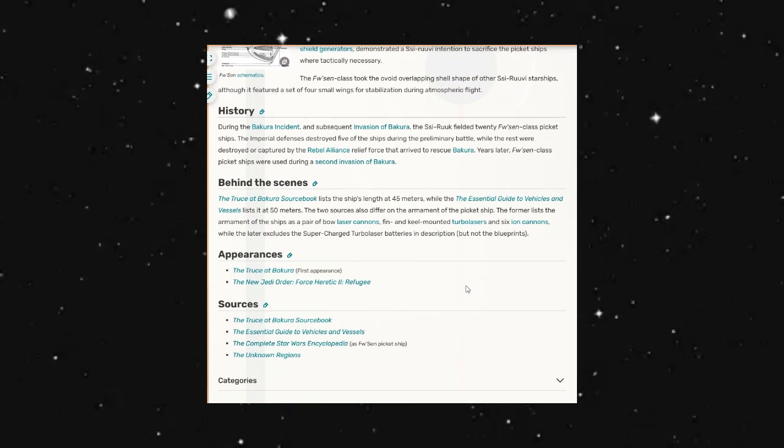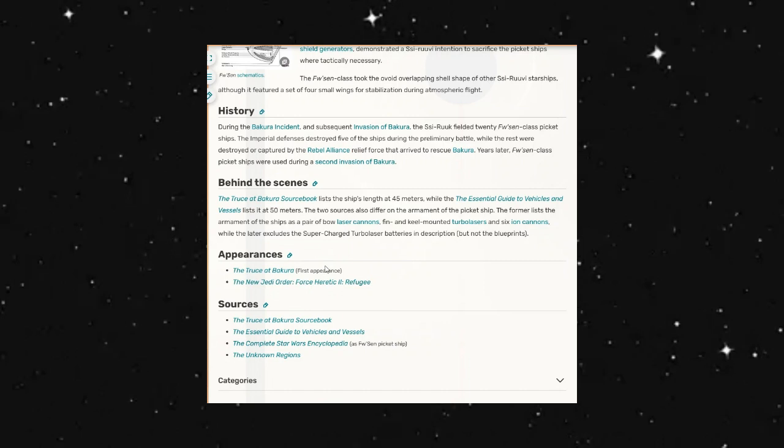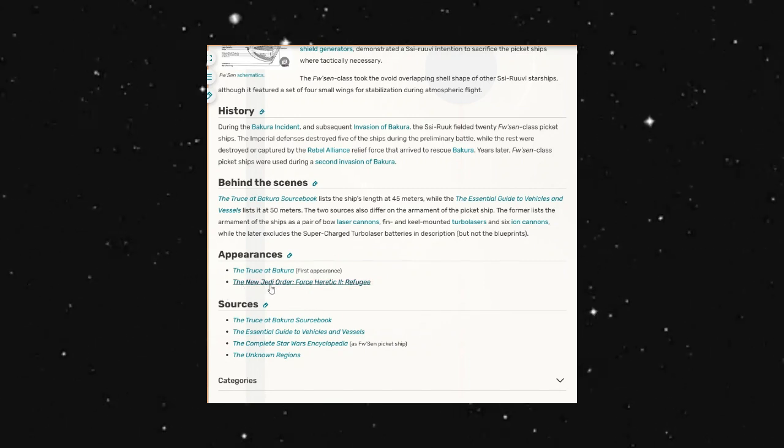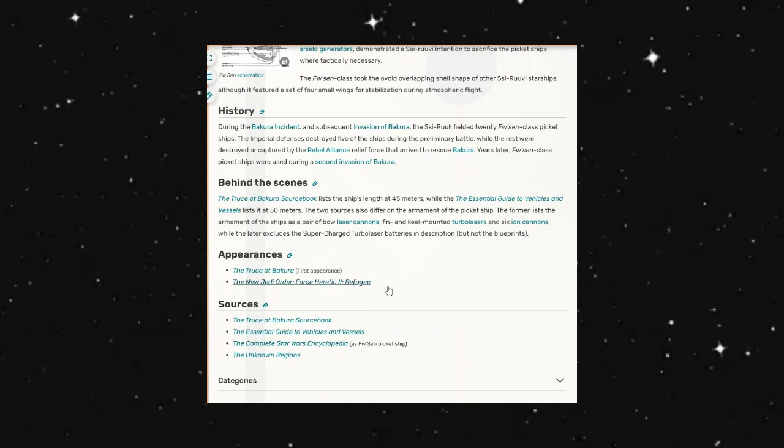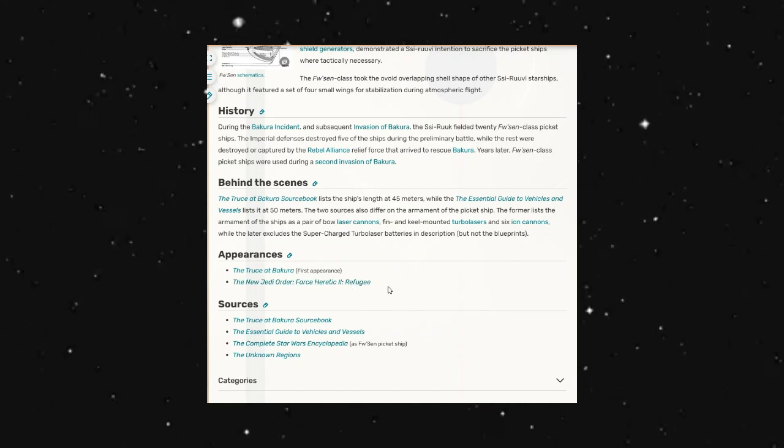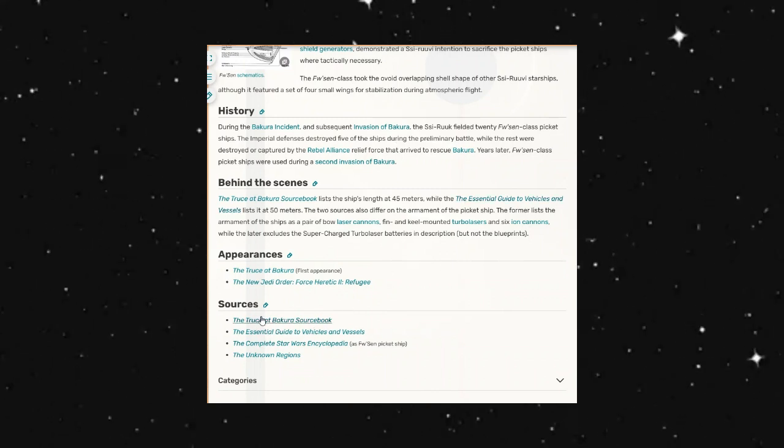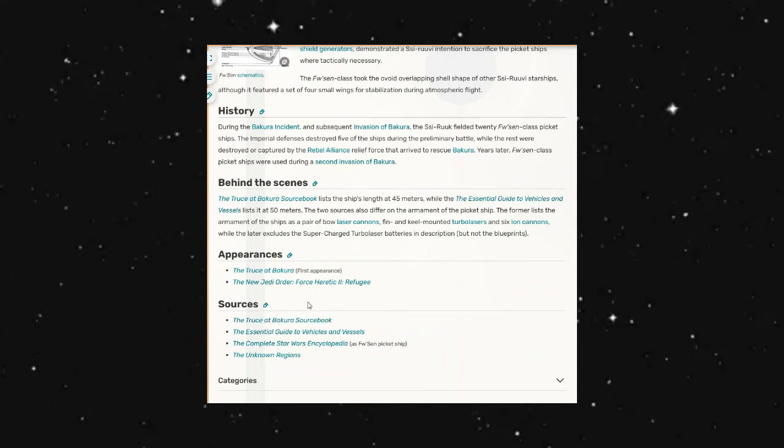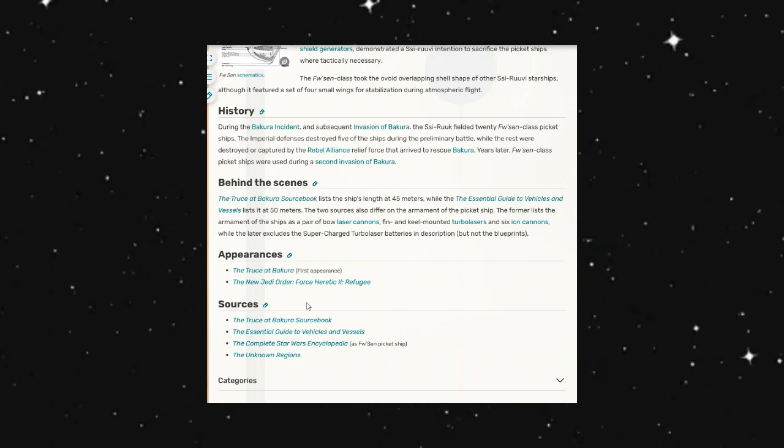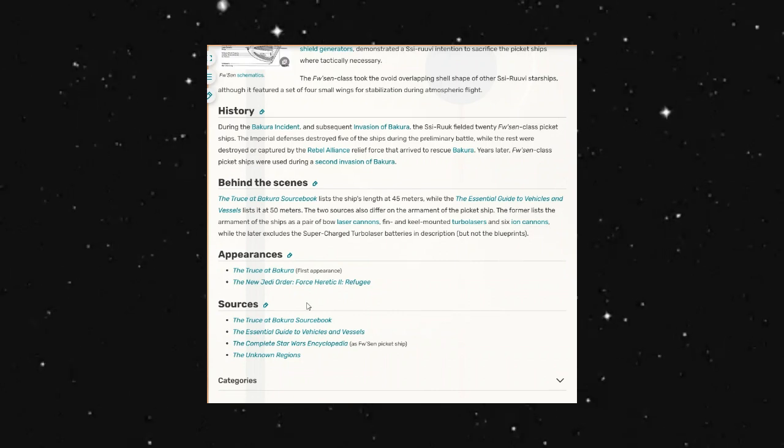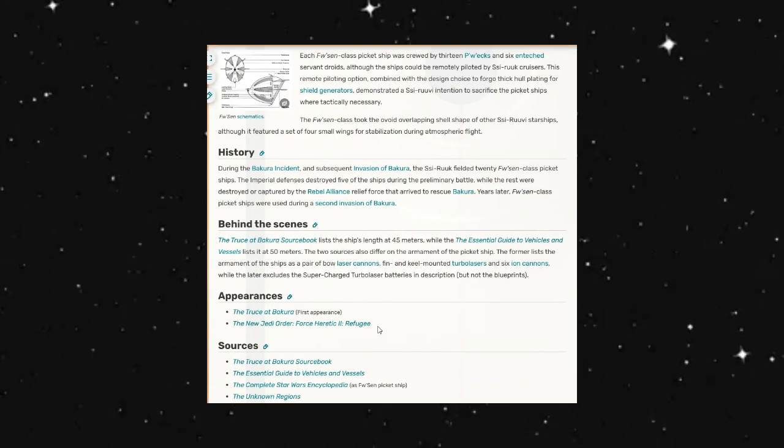So this does come to us from the Truce of Bakura, which is its first appearance, in the New Jedi Order Force Heretic 2 Refugee Novel. And of course then we get sources for this write-up in the Wikipedia from the Truce of Bakura source book, The Essential Guide to Vehicles and Vessels, Complete Star Wars Encyclopedia, and Unknown Regions. So that's what we get from the Wikipedia.